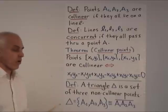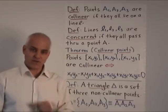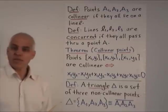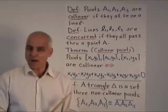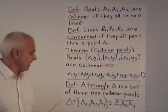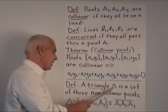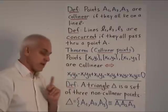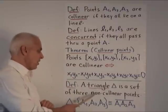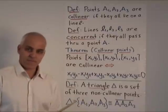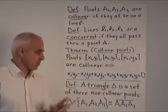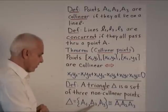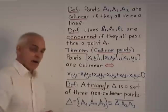There's a corresponding theorem for concurrent lines and I'll leave that to you as an exercise. And now we come to an absolutely fundamental definition. Really the essential object in elementary geometry is a triangle. It's a collection of three non-collinear points. That's exactly our definition. A triangle is by definition a set of three non-collinear points.